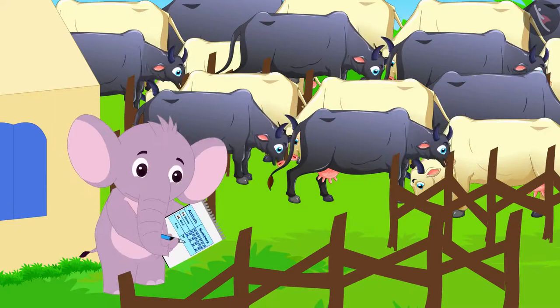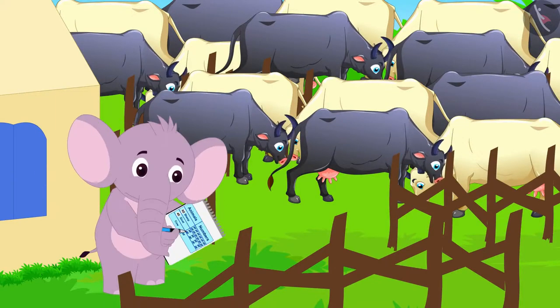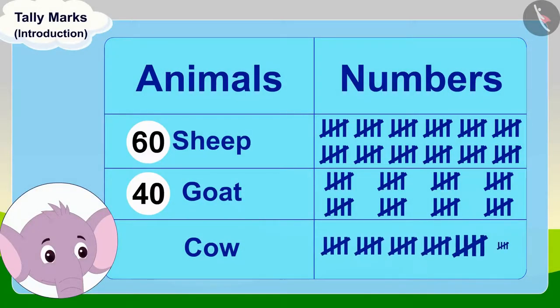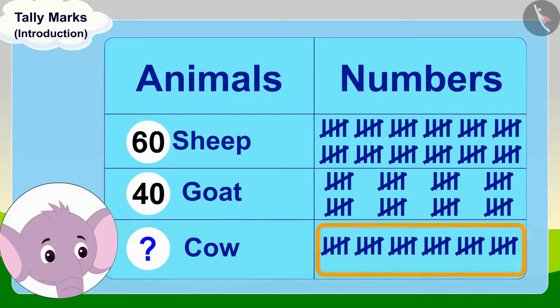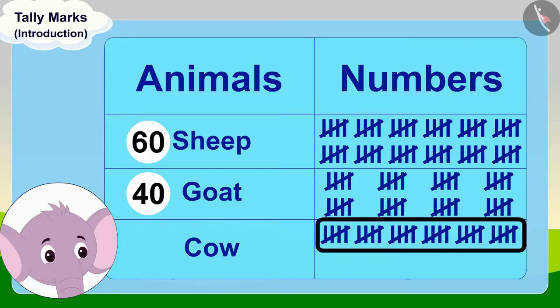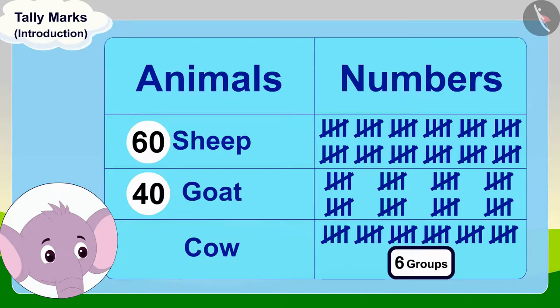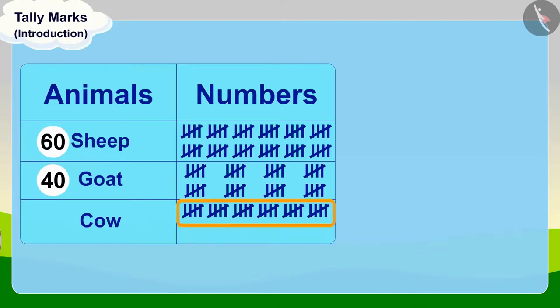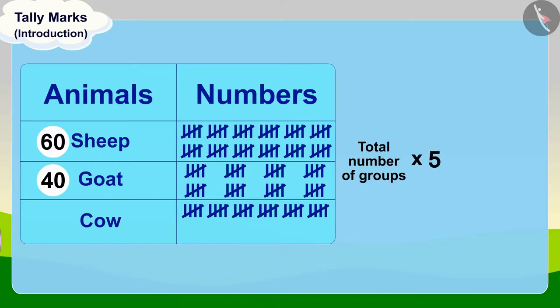Appu now counted his cows using tally marks. Do you know another method of counting tally marks quickly? We can use the table of five. There are six groups of tally marks here. To find the total number of cows, multiply the total number of groups by five. Six times five is thirty, so Appu has a total of thirty cows.